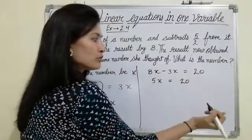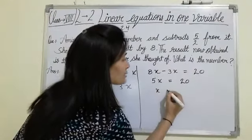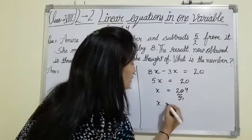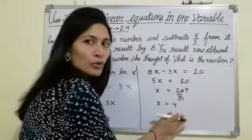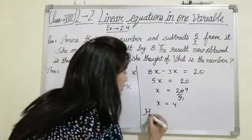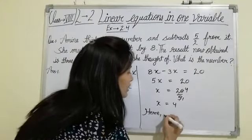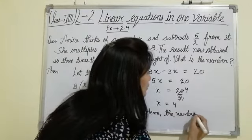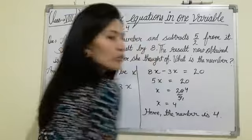Transposing 5 to RHS, x equals to 20 upon 5. 5 divides into 20 four times, so x equals to 4. Hence, the number is 4.